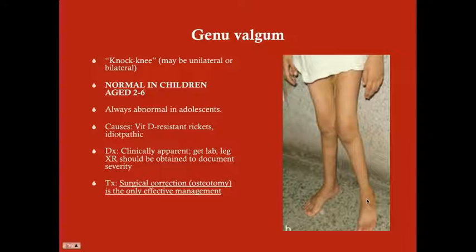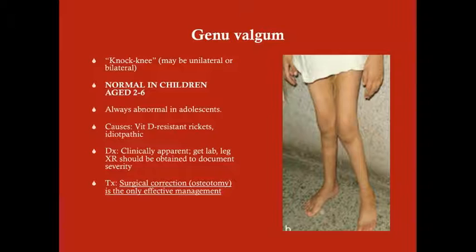Genu valgum is knock knee; it can be unilateral or bilateral. It's normal in children age two through six, so if you're talking about a preschool age child this is not something you need to worry about. Many USMLE vignettes will present patients who have genu valgum that is normal because they're in a phase of growth where this happens and then resolves.